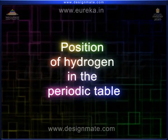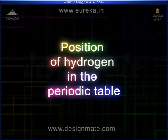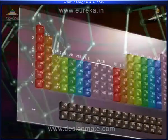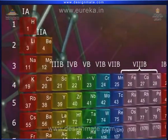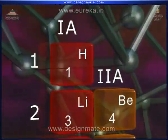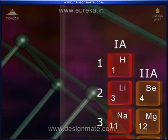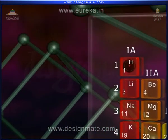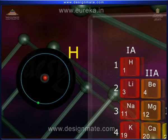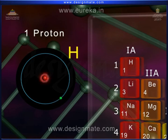The position of the first element, hydrogen, in the periodic table is a matter of discussion. As compared to other elements, the electronic configuration of hydrogen is most simple. It has a nucleus having one positive charge and one electron in its only orbit.